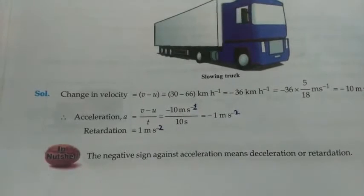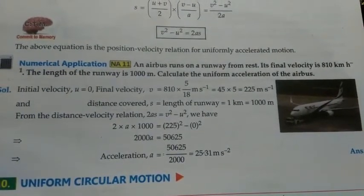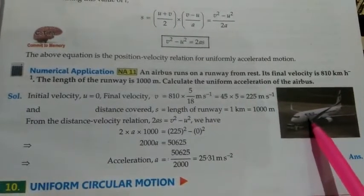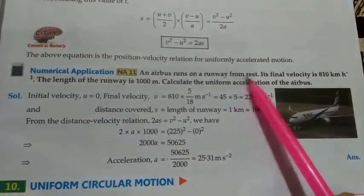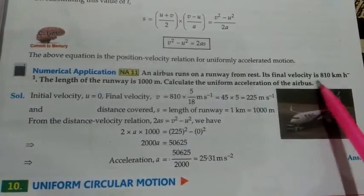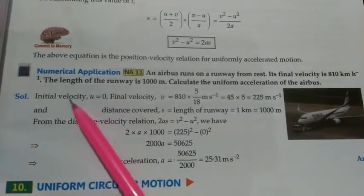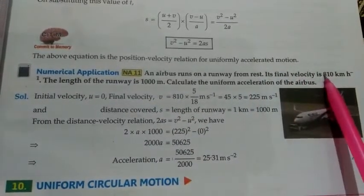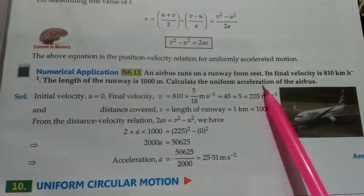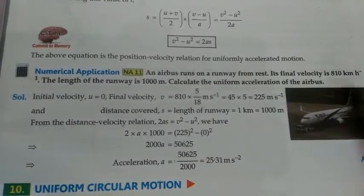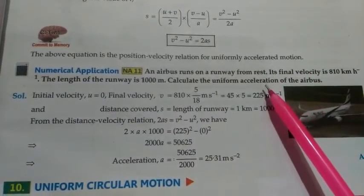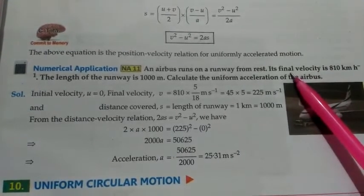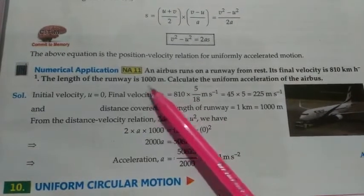Next numerical: an airbus runs on a runway from rest — initial velocity is 0. Its final velocity is 810 km/h and the length of the runway is 1000 m, so distance is given. We have initial velocity, final velocity, and distance — and we have to calculate acceleration. Note that time is not given here; in place of time, distance is given.